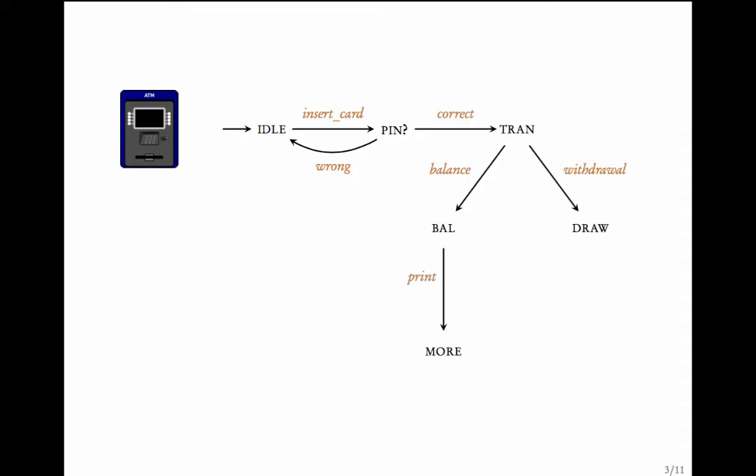And that is what it does. So, it prints the balance and now it gets into a phase where it is asking if the user wants to perform more transactions. If it is yes, the code goes back to this transaction phase. If the user says no, the code goes back to the idle state after ejecting the card.